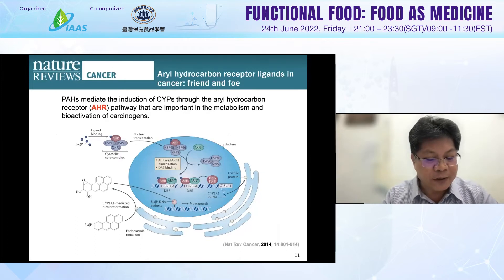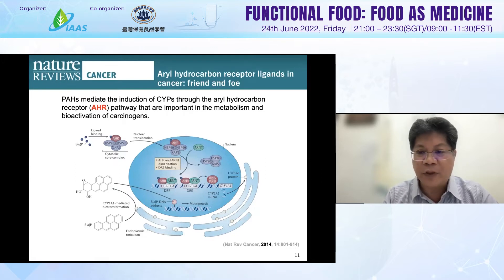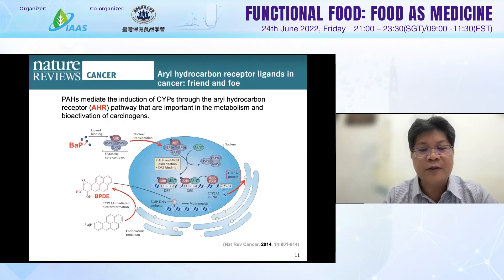When PAH enters the body, bioactivation is catalyzed by cytochrome P450, also called the Phase I enzyme, to form the ultimate mutagenic metabolite. For example, benzo[a]pyrene, BAP, is converted to the mutagen BPDE, called 7,8-dihydro-9,10-epoxide, which can react with DNA and lead to BPDE-DNA adduct formation. This concentrates gene mutation and initiates tumorigenesis. BPDE can ultimately induce mutagenesis.